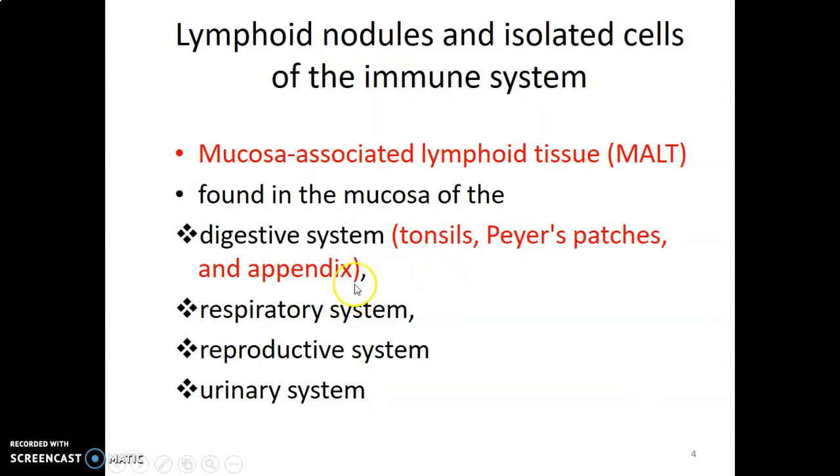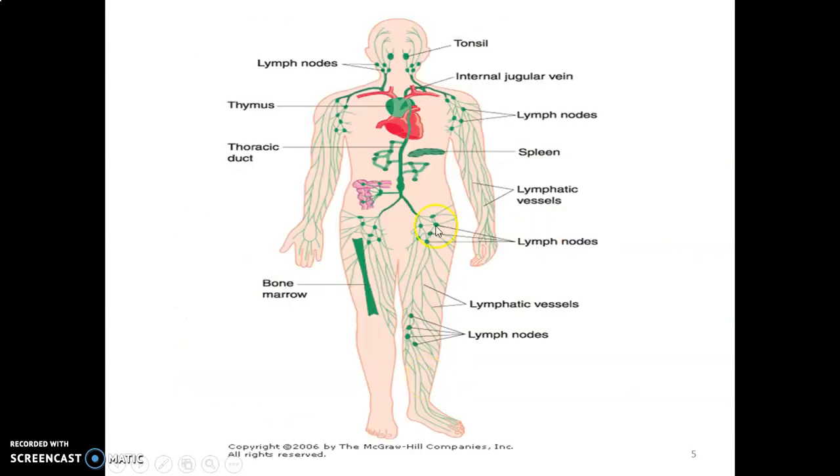These nodules in the GI, respiratory, reproductive, and urinary mucosa are all called mucosa-associated lymphoid tissue.